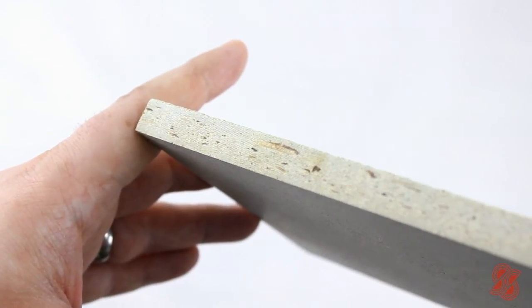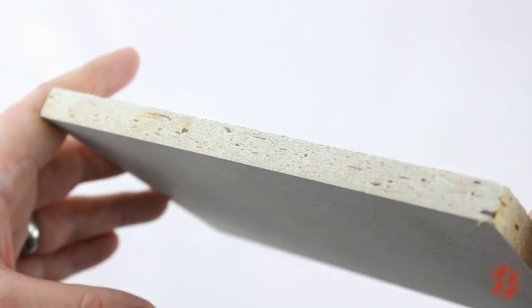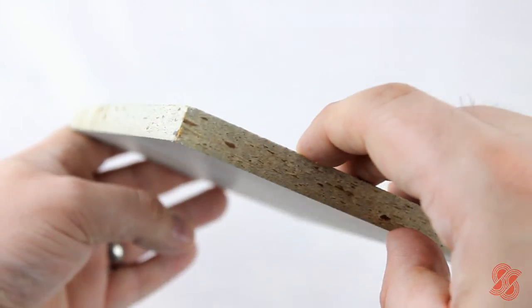QuietBoard is a very dense product, light grey in colour, and both faces have a hard, smooth, flat surface.